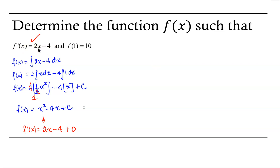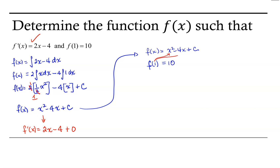Now we need to ensure that our function satisfies the second criteria. So our f of x is equal to x squared minus 4x plus c, and what we want is that when we evaluate our function at 1, we end up with 10. So we're going to replace x in our function with 1. We get 1 squared minus 4 times 1 plus c equals 10. That's 1 minus 4 plus c equals 10, which is negative 3 plus c equals 10. Adding 3 to both sides, we get c equals 13.